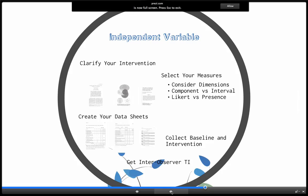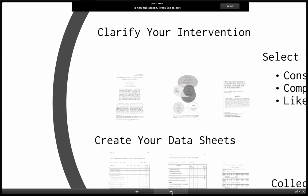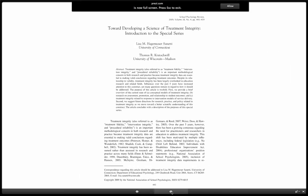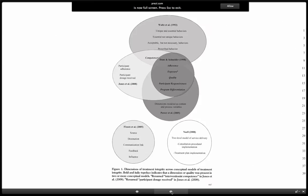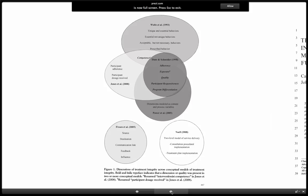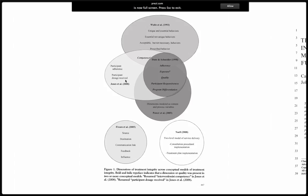First you want to clarify your intervention and make sure that you describe it in a way that is replicable. As far as determining what you want to measure about your treatment integrity, Hager, Moser, Sinetti, and Cradwell wrote a really nice piece in School Psychology Review in which they reviewed various dimensions of treatment integrity. It could be that what's most important in your intervention is whether or not the person received the appropriate dosage — for example, did the student have the opportunity to engage in 20 practice problems, or did the client's session last 50 minutes?